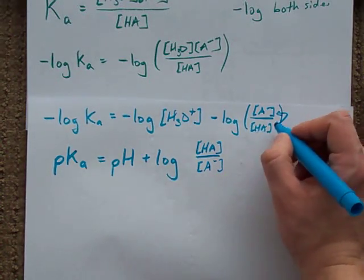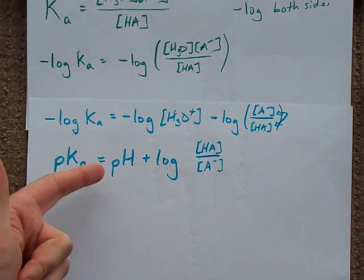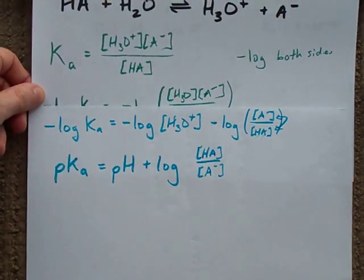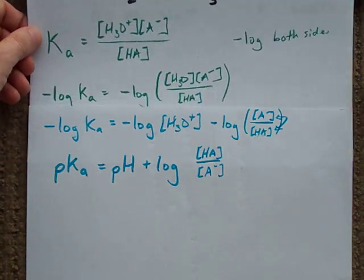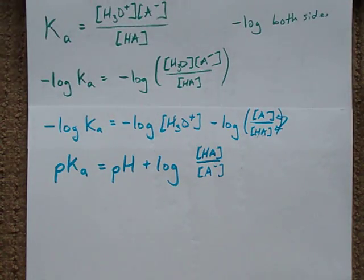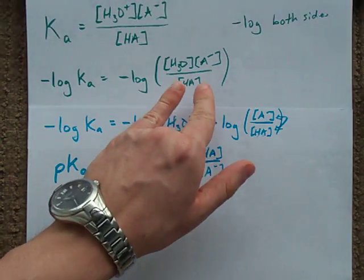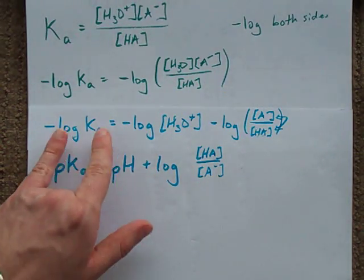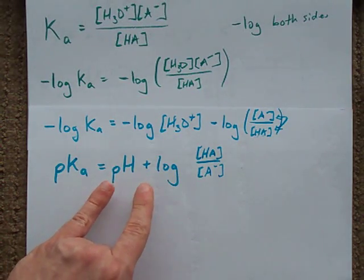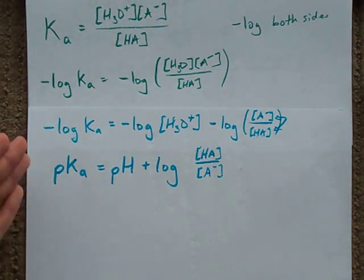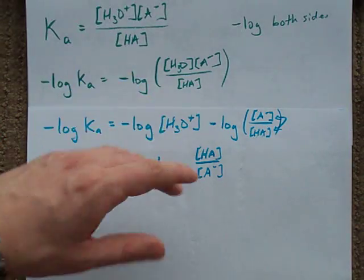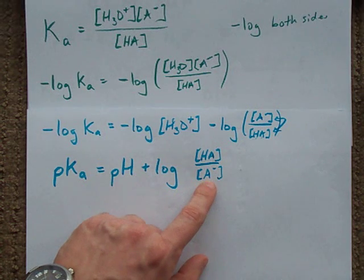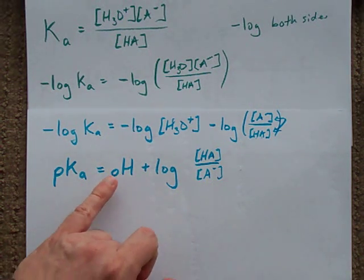In any case, this is your Henderson-Hasselbalch equation. All we did was start with the original equilibrium expression that you guys all know and love, take the negative log of both sides, divide up this, replace things like negative log of Ka with pKa, negative log of H plus with pH. And you end up with a nice, smooth equation that we can plug the concentration of acid and conjugate base into to get the pH.